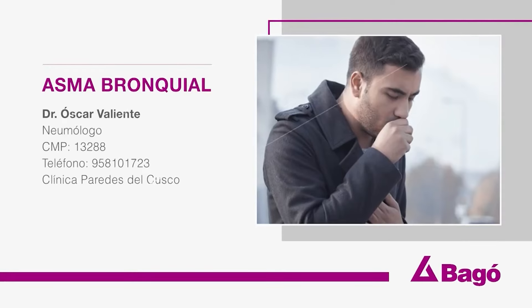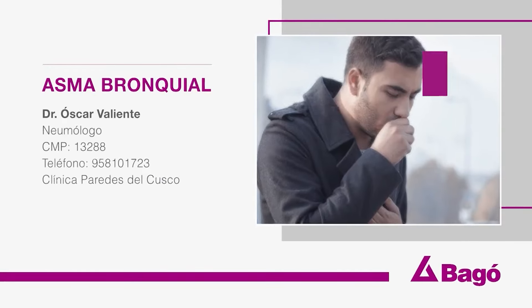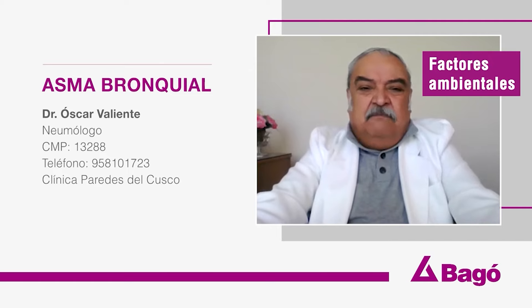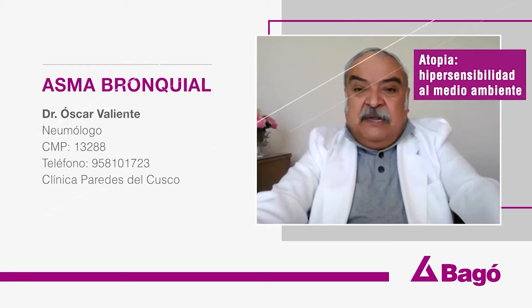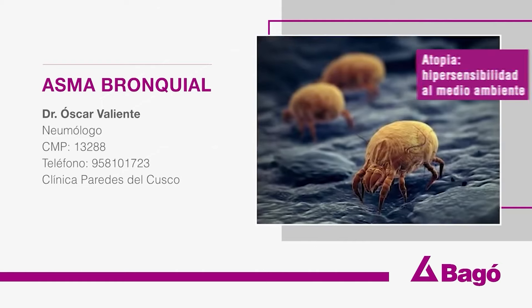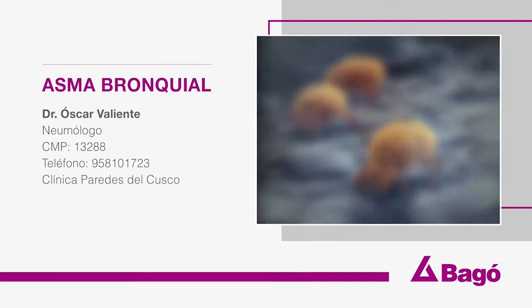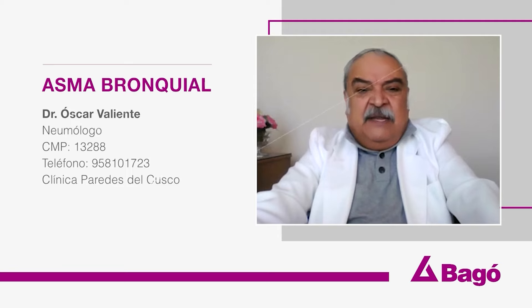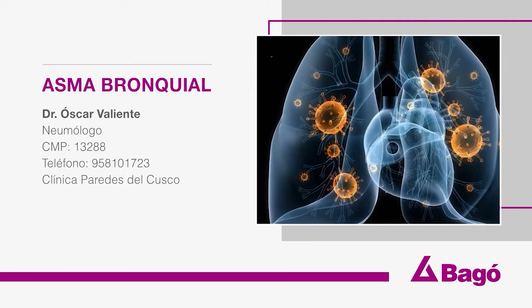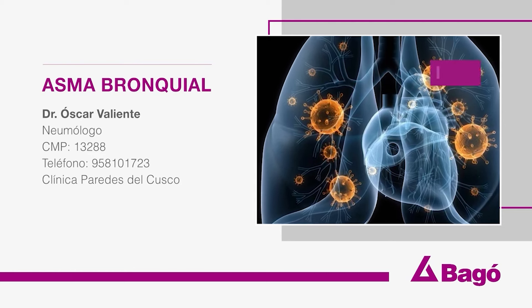¿Cuáles son los factores ambientales que se presentan cuando vienen en los primeros años? El asma bronquial determina que las personas que tienen atopia puedan volverse asmáticos. Por ejemplo, los ácaros del polvo. Y esto generalmente lo ubicamos en las habitaciones, en los dormitorios, en las sábanas o en los colchones.